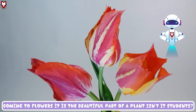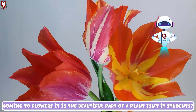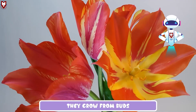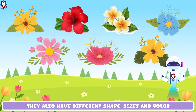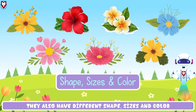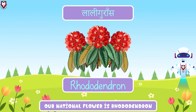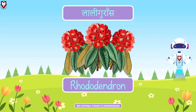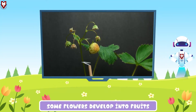Coming to flowers, it is the beautiful part of a plant. Isn't it, students? They grow from buds. They also have different shapes, sizes and colors. Our national flower is Rhododendron.